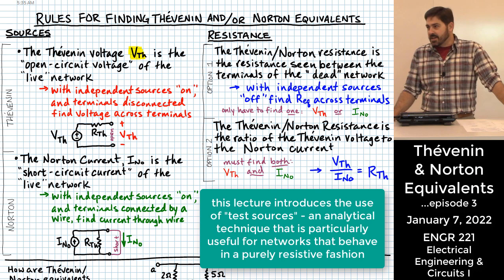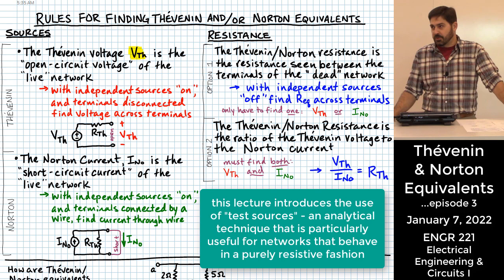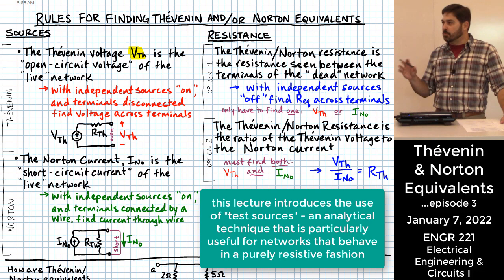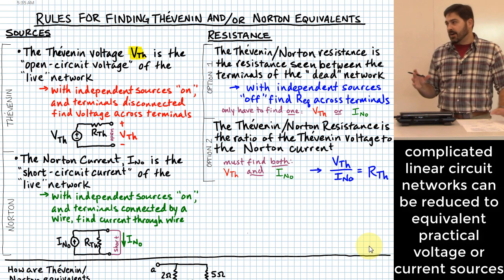You probably remember from last time the process of going through and trying to find either a Thevenin equivalent or a Norton equivalent circuit for a more complicated network. I don't necessarily want to cover all that in super great detail again, but I do want to review it just on a surface level.